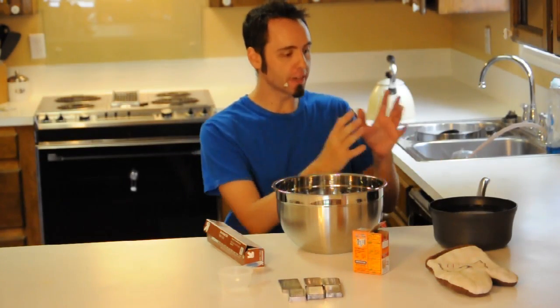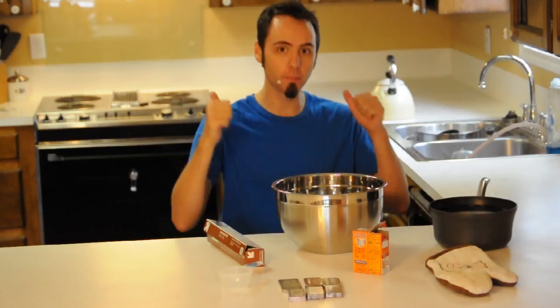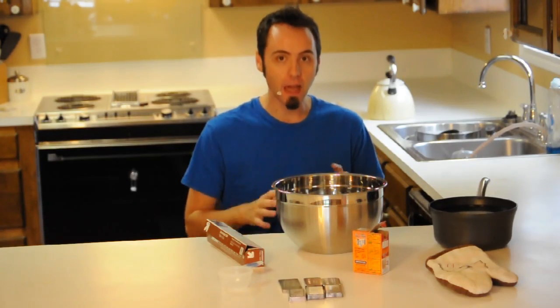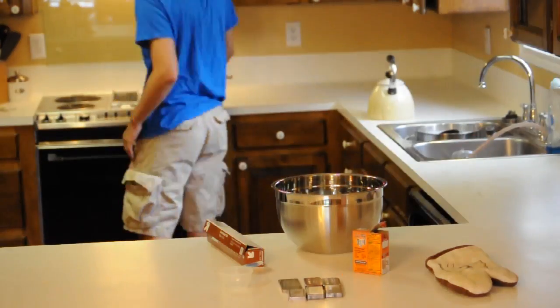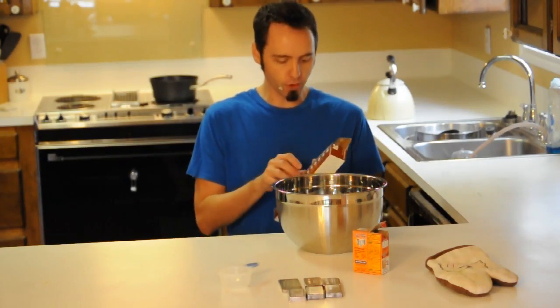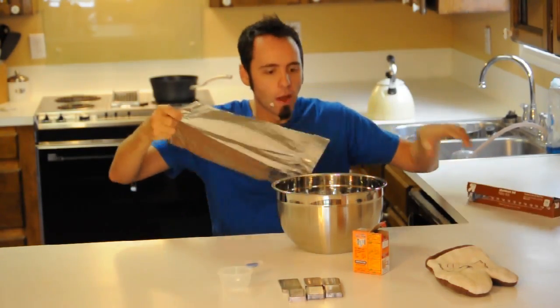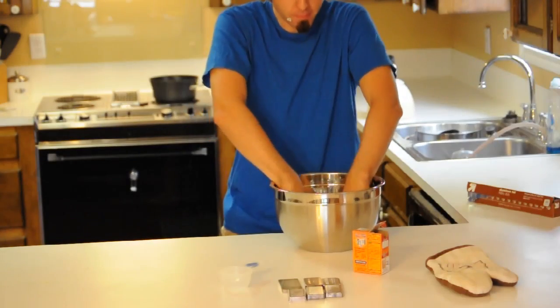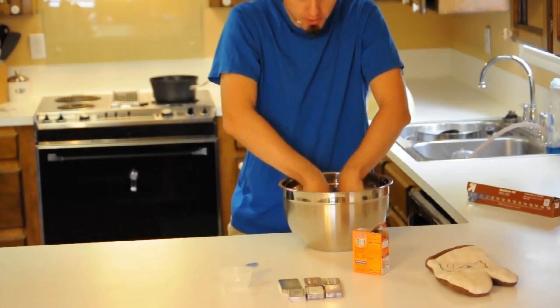First thing you want to do is we need to bring this water to a boil. So I'm going to go ahead and put that on the stove behind me and we'll get that boiling. Okay, now while that's boiling, we want to take our aluminum foil and we want to spread it out into the bottom of the bowl here. Make sure all sides are covered.